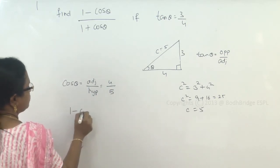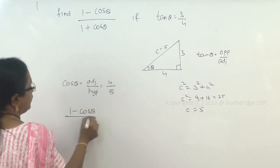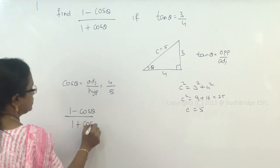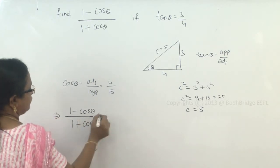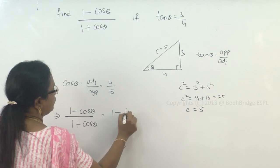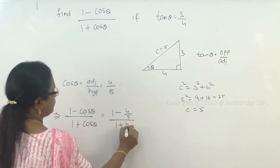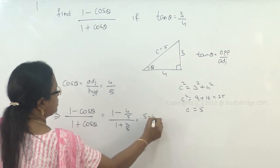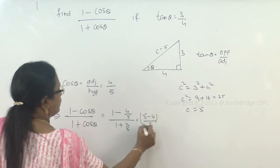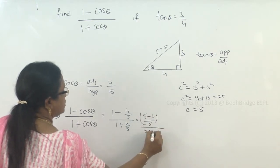So, 1 minus cos theta by 1 plus cos theta will be equal to 1 minus 4 by 5 divided by 1 plus 4 by 5. So, this is 5 minus 4 by 5 all divided by 5 plus 4 by 5.